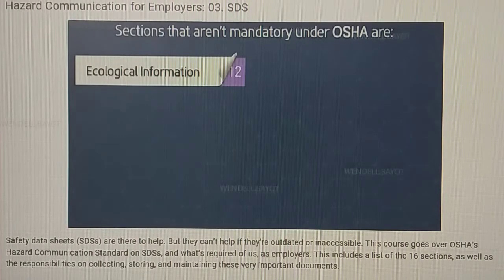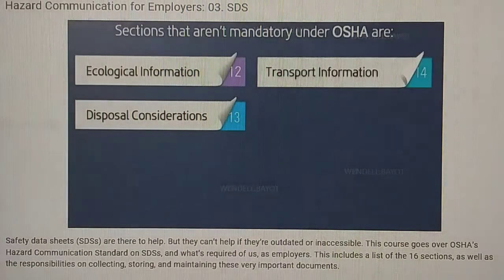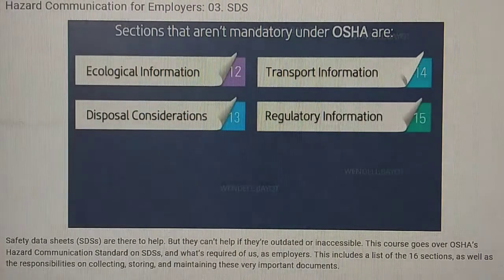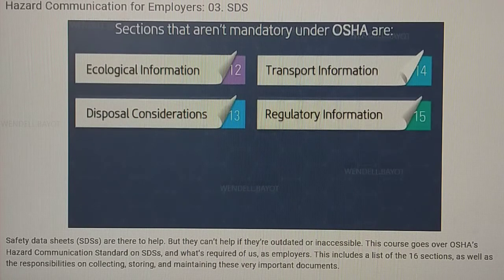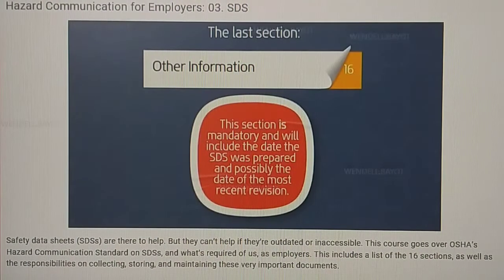The four sections that aren't mandatory under OSHA are: 12. Ecological Information, 13. Disposal Considerations, 14. Transport Information, 15. Regulatory Information. Then the last section is 16. Other Information. This section is mandatory and will include the date the SDS was prepared, and possibly the date of the most recent revision.